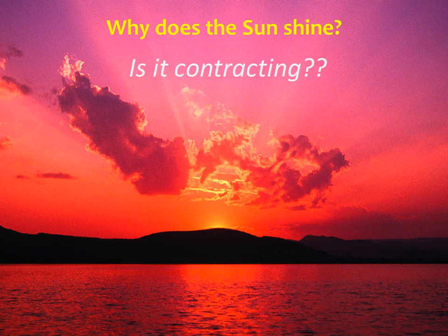By the late 1800s, astronomers came up with the idea that the sun generates energy by slowly contracting in size. This gravitational contraction would, in theory, keep the inside of the sun hot and the outside shining steadily for up to about 25 million years.